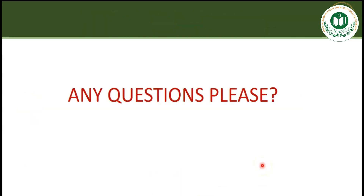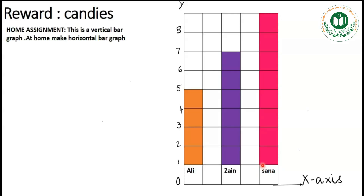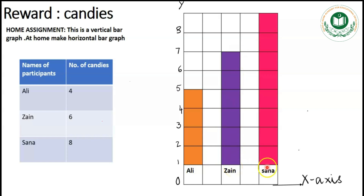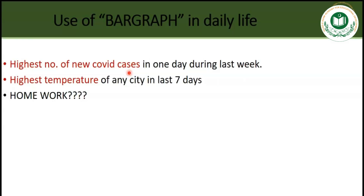Dear students, do you have any questions? Since you participated very well during my lecture, I will give you a reward in the form of candies. Ali has got four candies, Zan has got six candies, Sana has got eight candies. I have already plotted a bar graph for Ali, Zan, and Sana — Ali's bar goes up to four blocks, Zan's to six blocks, and Sana's to eight blocks. Your home assignment is to take this vertical bar graph and make a horizontal bar graph.